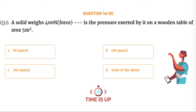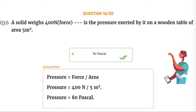The correct answer is Option A: 80 Pascal. Pressure = Force / Area. Pressure = 400 N / 5 m² = 80 Pascal.